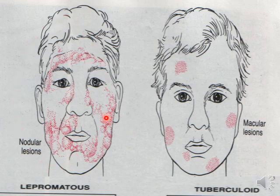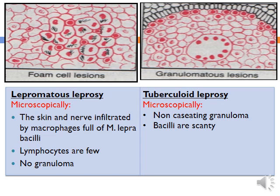This is an example of lepromatous leprosy — we see nodules affecting both sides of the face symmetrically. In tuberculoid leprosy in immunocompetent persons, there is formation of multiple macules affecting the face asymmetrically. Microscopically, in lepromatous leprosy the skin and nerves are infiltrated by many macrophages that have engulfed lepra bacilli inside them; these aggregates are called globi. The lymphocytic reaction is usually sparse with no granuloma formation — indicating immunosuppression. In tuberculoid leprosy, there is formation of well-formed giant cell granulomas with lymphocytes present, and the bacilli are scanty due to the immune reaction against them.